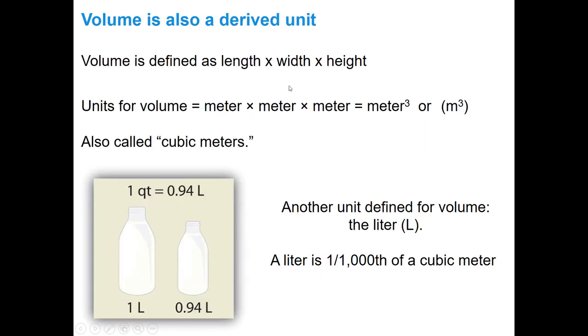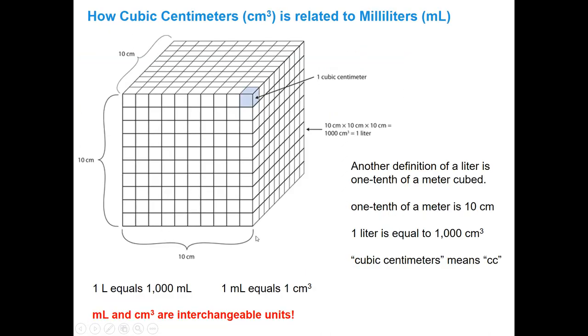Volume is another derived unit, and that's length times width times height. Since the units for volume are meter, then we're going to have meters times meters times meters, so a meter cubed. M to the third power is meters cubed, also called cubic meters. Now, if you take one one thousandth of a cubic meter, that's going to be a liter. Compared to the quart, you can see that the liter is a little bit bigger. So 0.94 liters is equal to one quart.